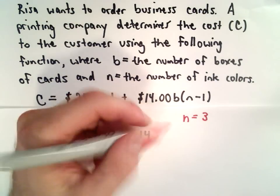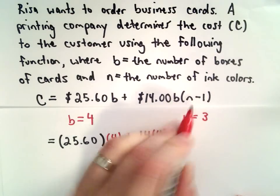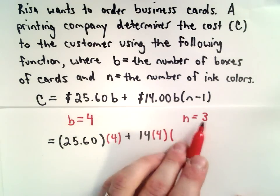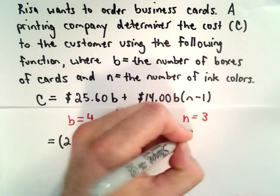multiplied by B, which is going to be 4, multiplied by N-1. Well, N is equal to 3, so we'll have 3 minus 1.